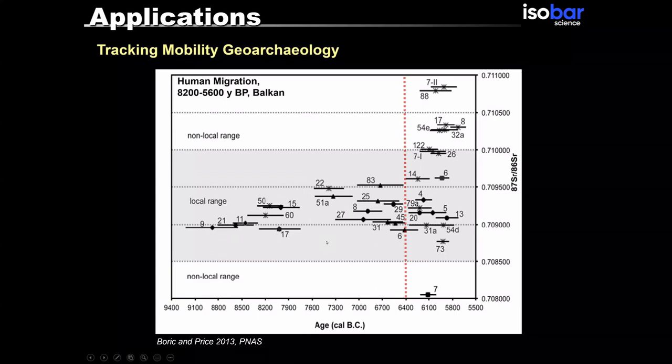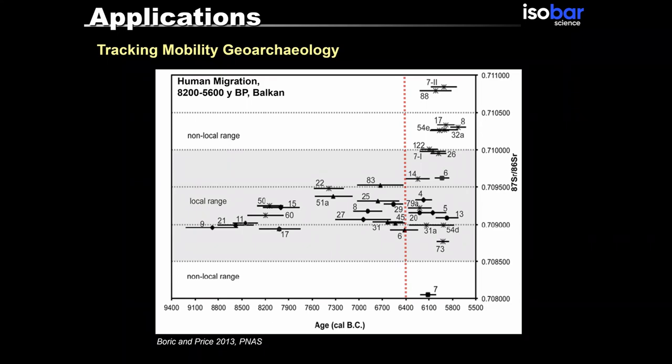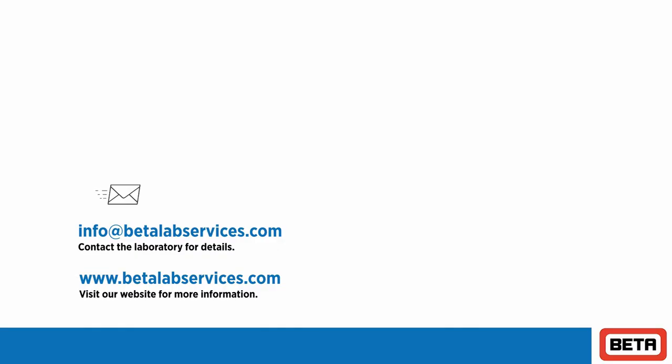By utilizing the strontium isotopic ratio, they would be able to argue the time of the migration of newcomers in the region.